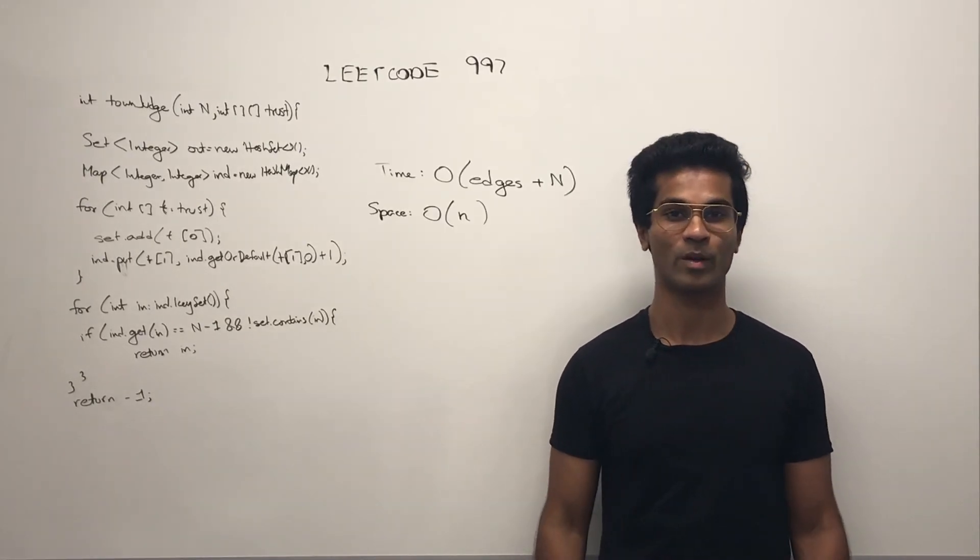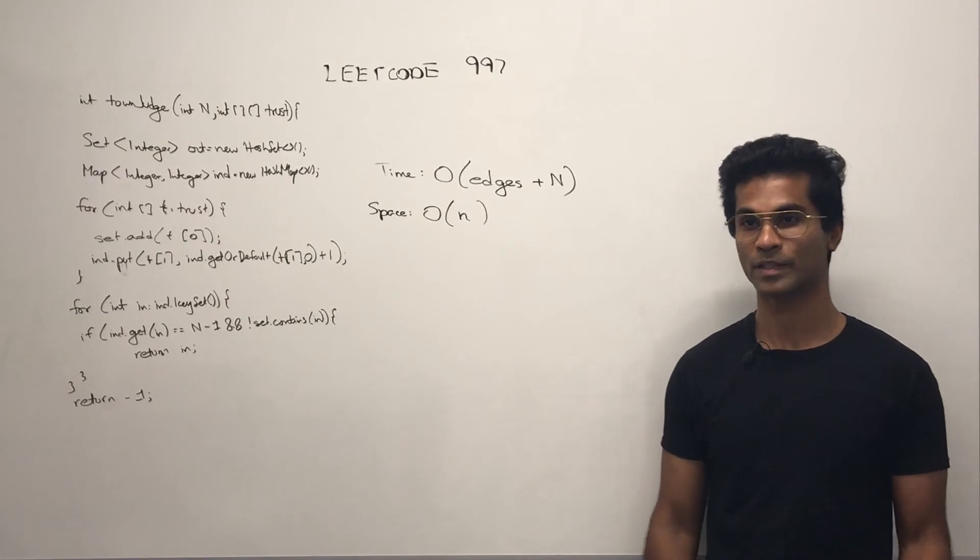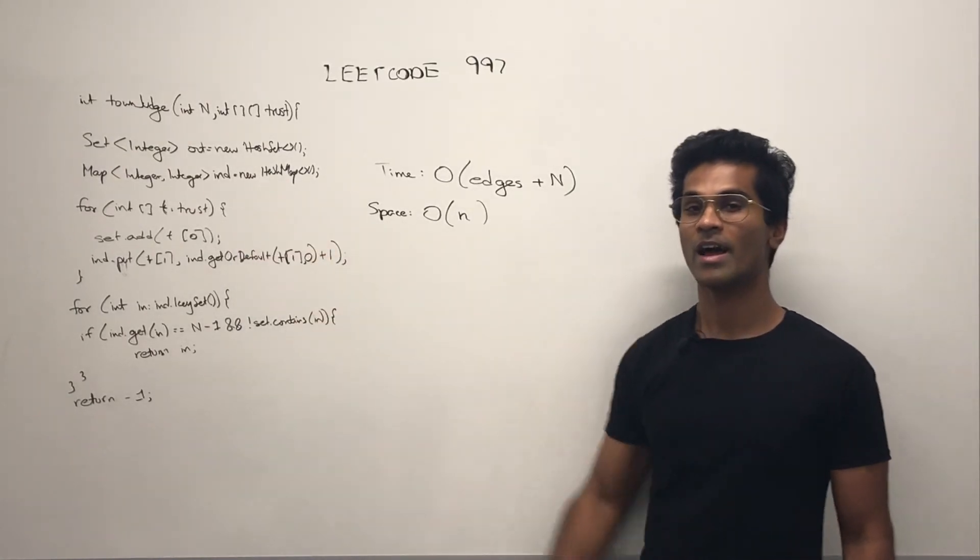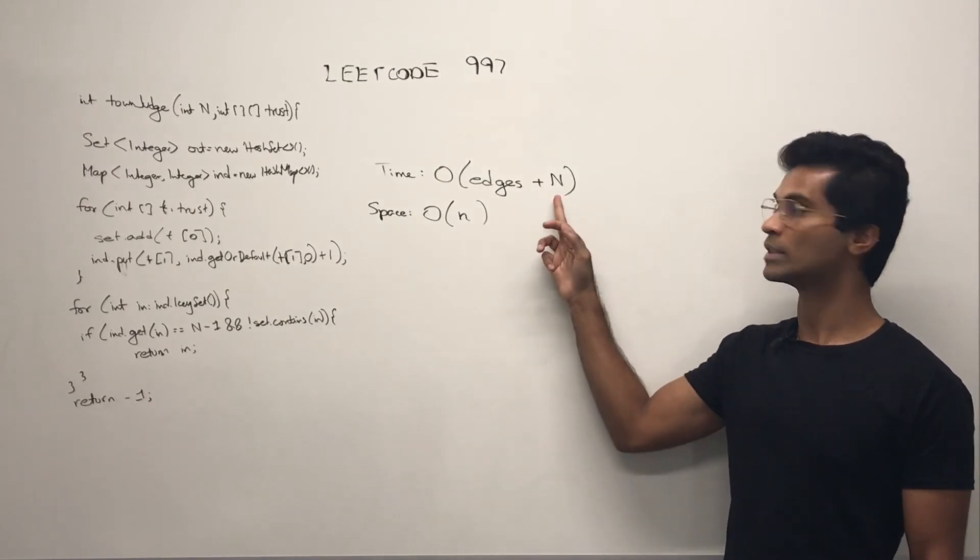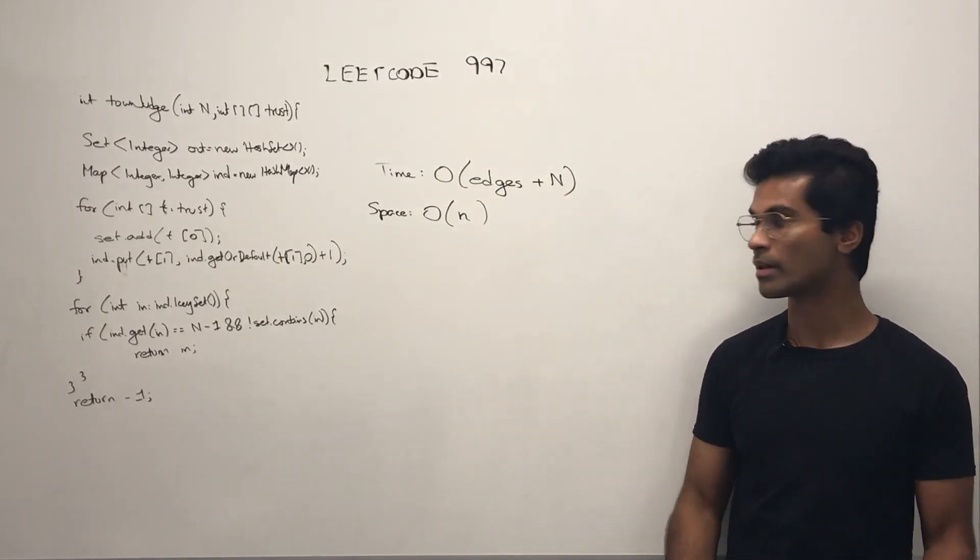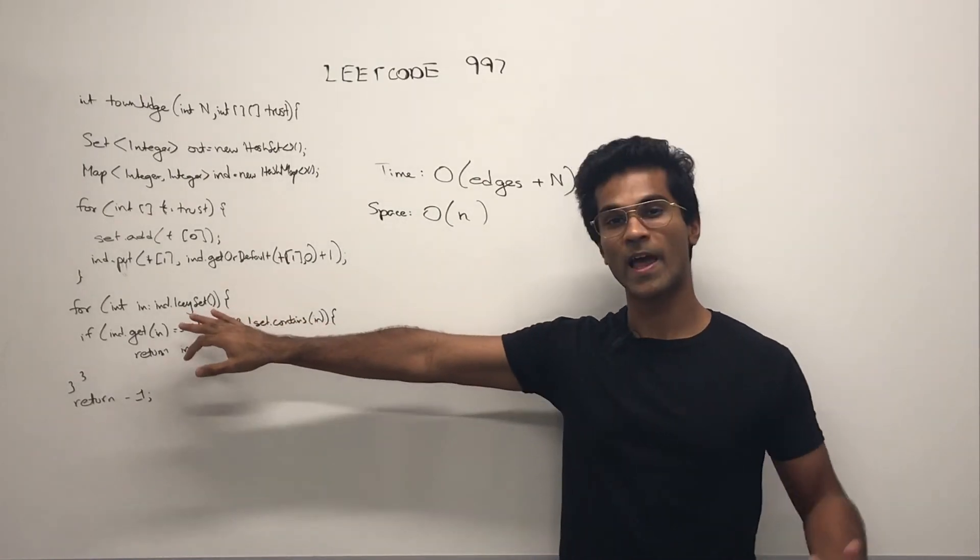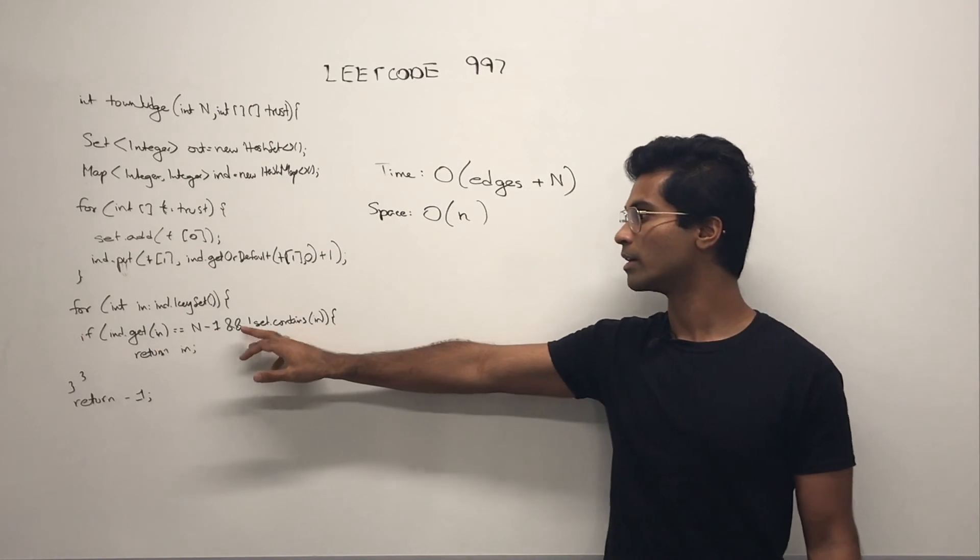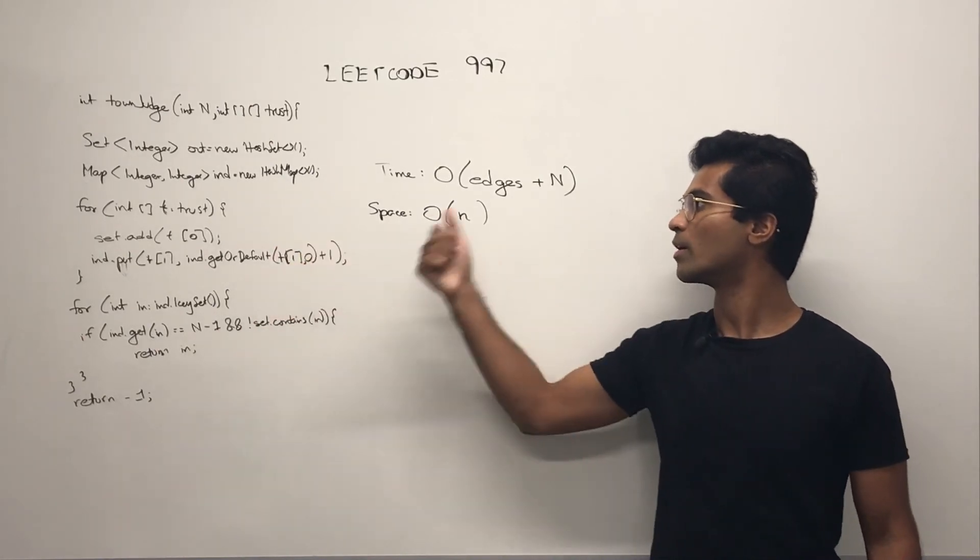Let's look at the space and time complexity. For the time complexity, we are first going through the number of edges, and then we are going through potentially n nodes, or almost n nodes. We don't know the exact input, but almost n nodes might be having an in degree of at least one, which we record. So we can add this one and this one, and we get our time complexity.